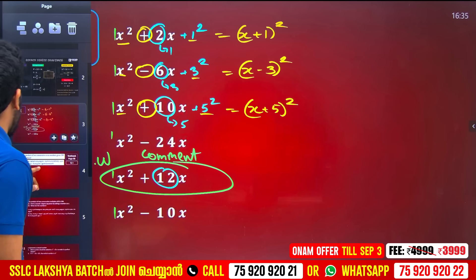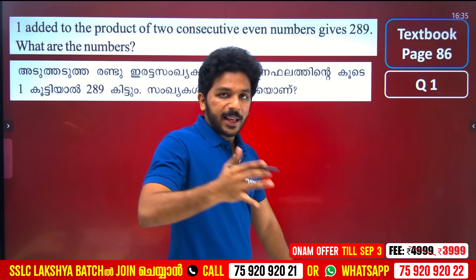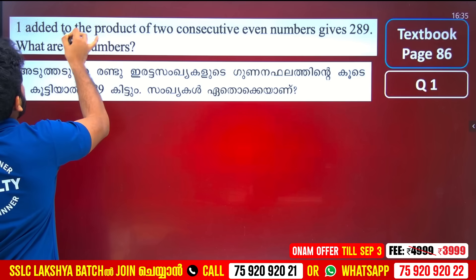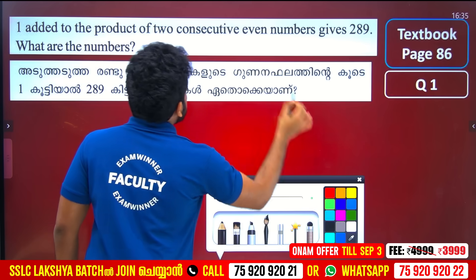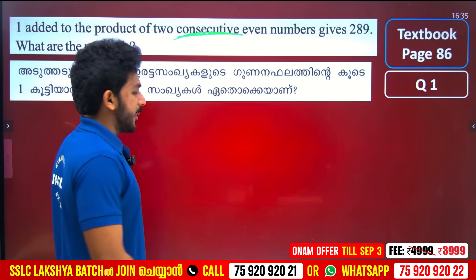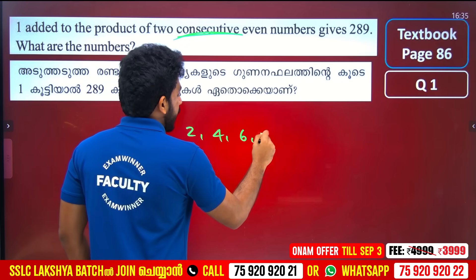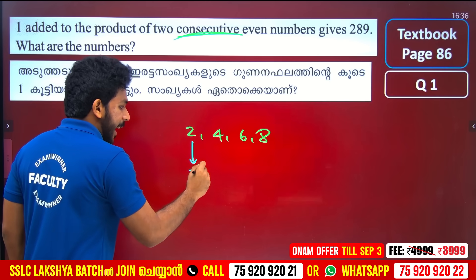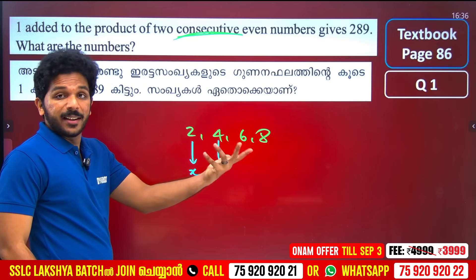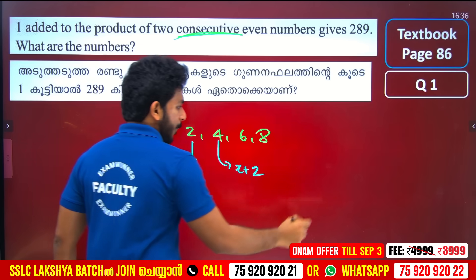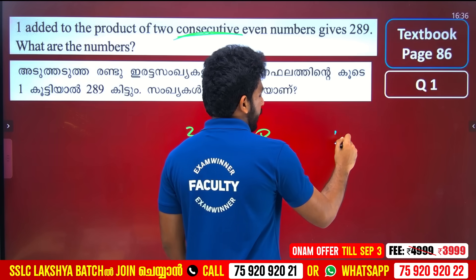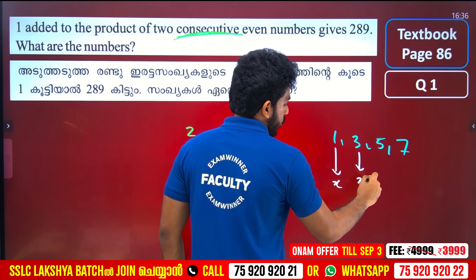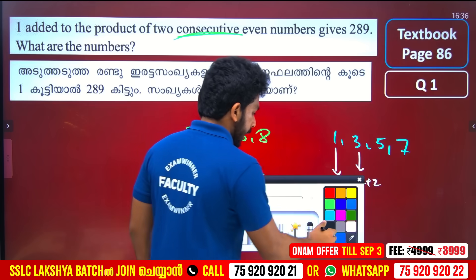This is the first topic: the product of two consecutive even numbers. Even numbers are 2, 4, 6, 8 — even numbers are at the top. The number of x squared is x plus something. This means x plus 2. If the next number is x plus 2, now I am going to find this problem.